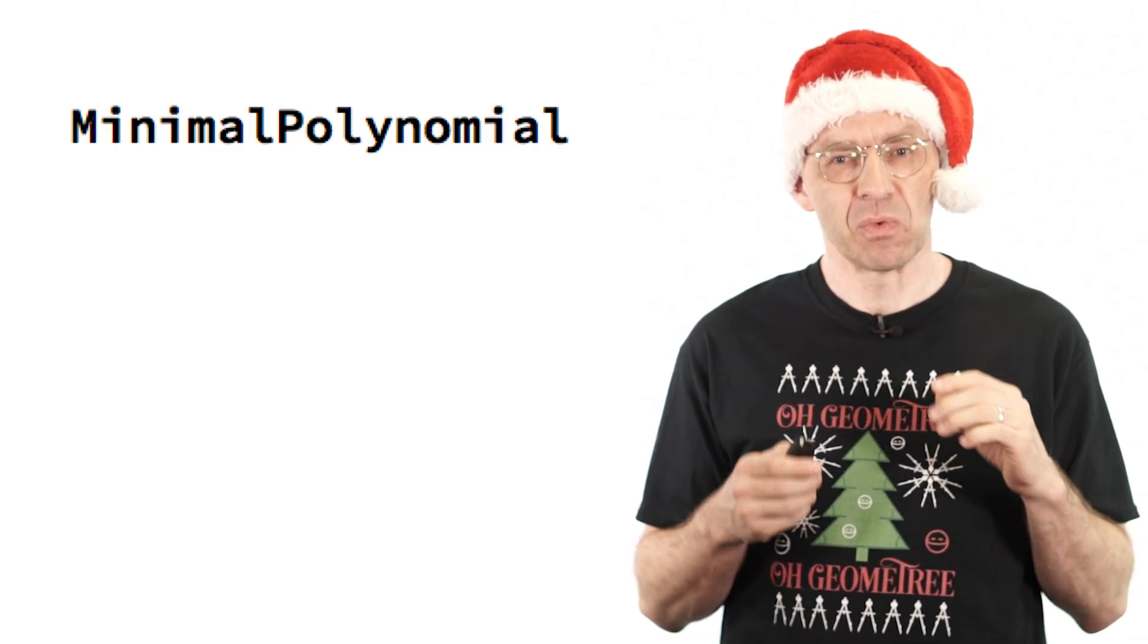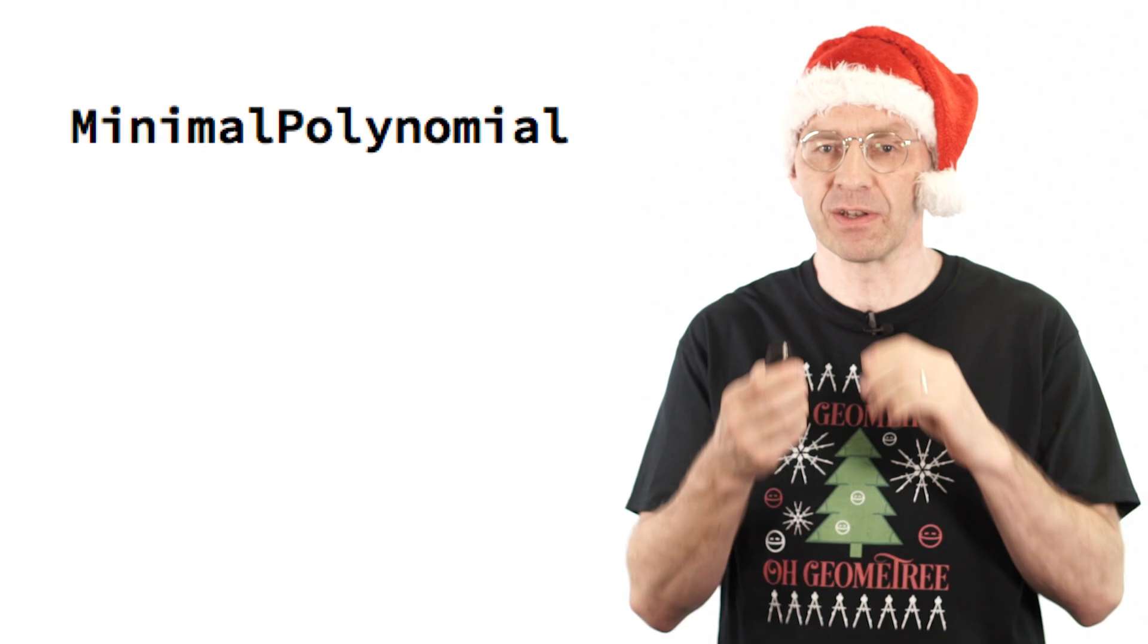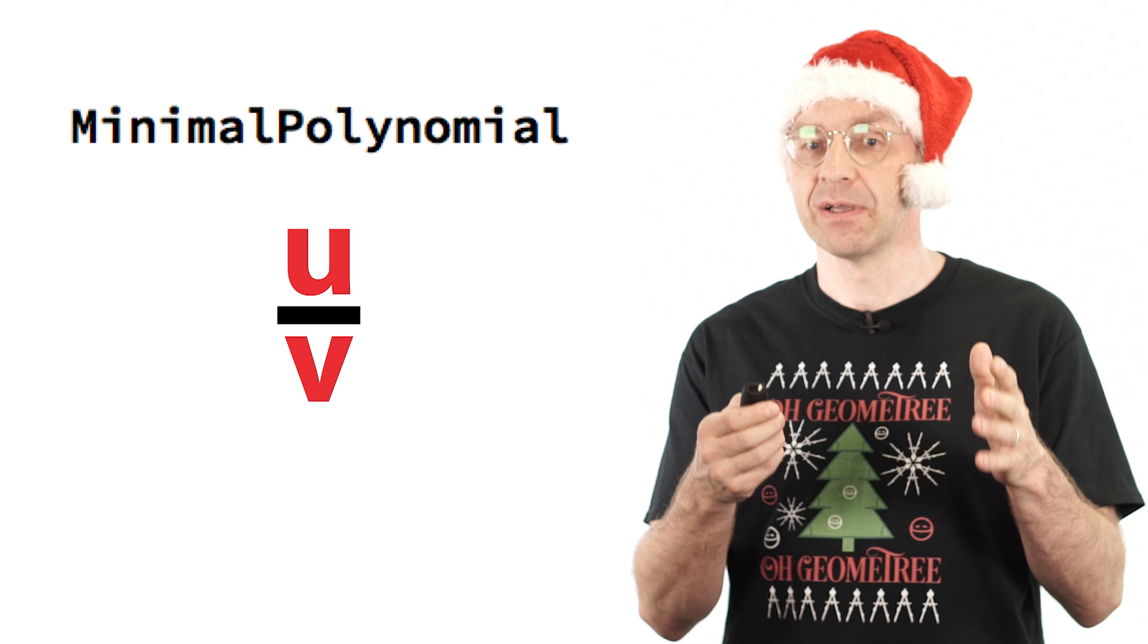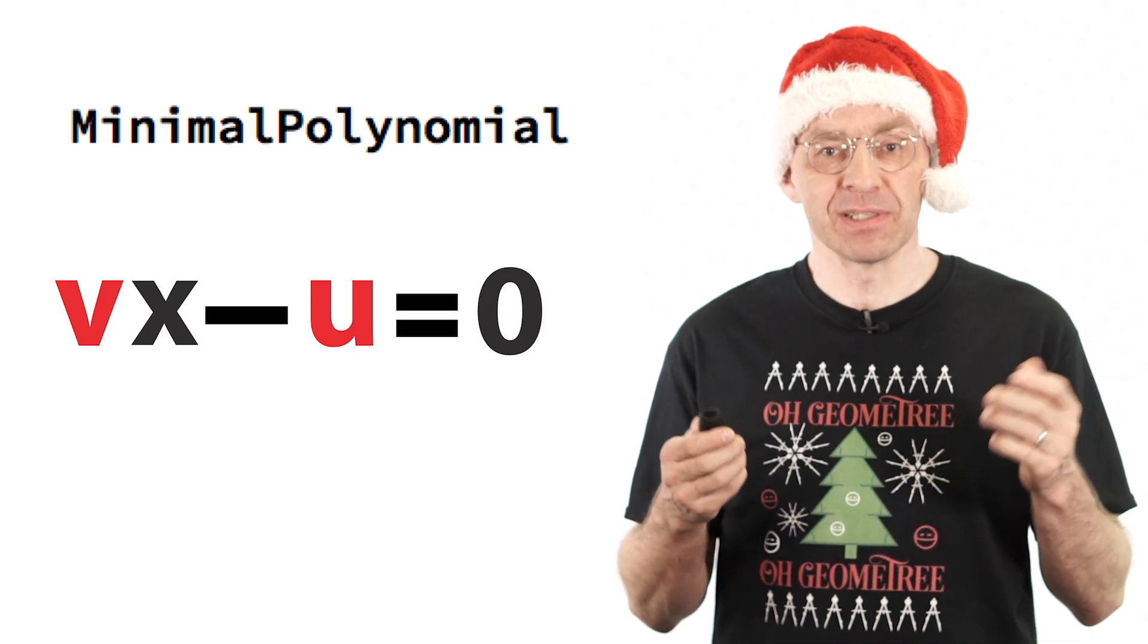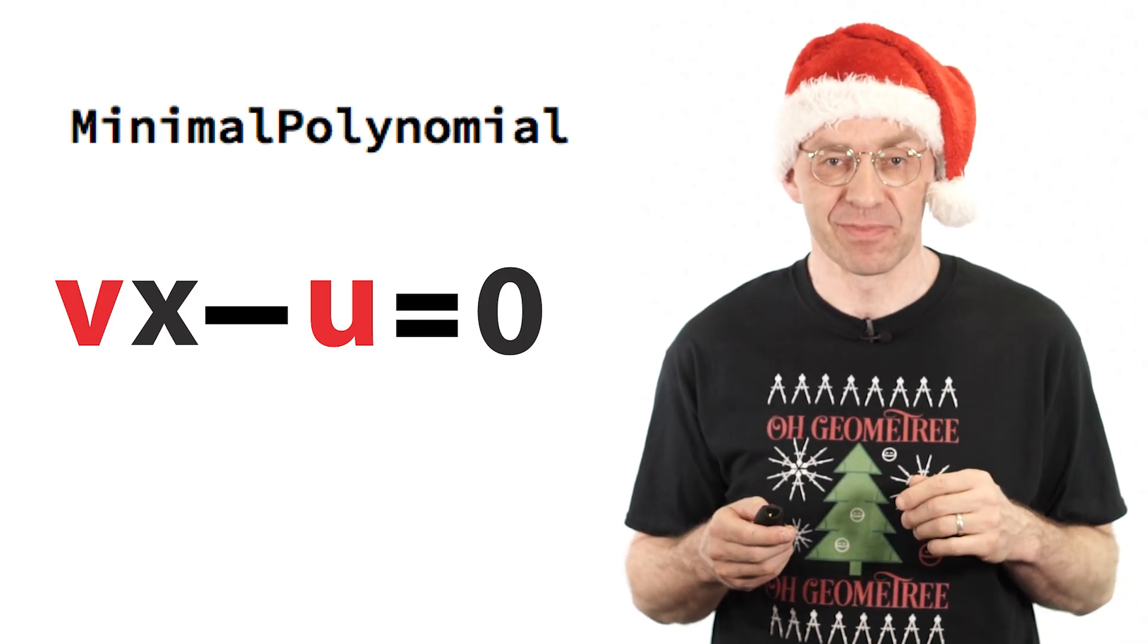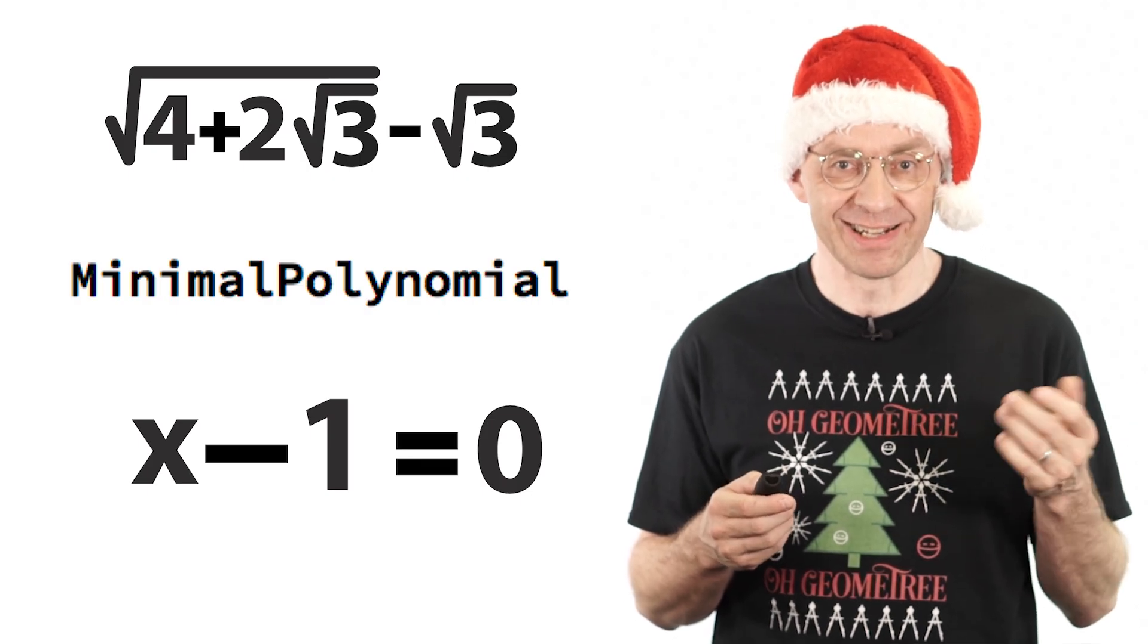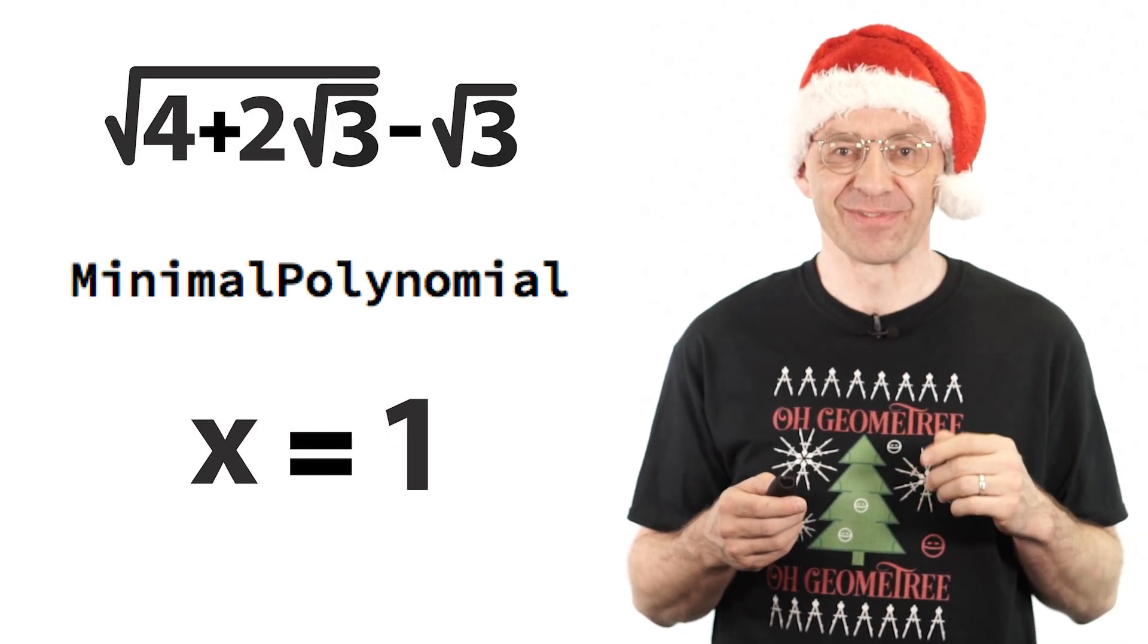But wait a minute. What is a polynomial equation with integer coefficients of least degree for a rational number? Think about it for a second. The answer is, the simplest possible such equation is a linear equation. This one here. But that means that you can tell at a glance from the minimal polynomial whether a rooty expression is a rational number. And if so, what rational number? For example, on input of this expression here, Mathematica spits out this linear equation. And what does that mean? Well, obviously that our number is rational and equal to 1. Surprising but true.